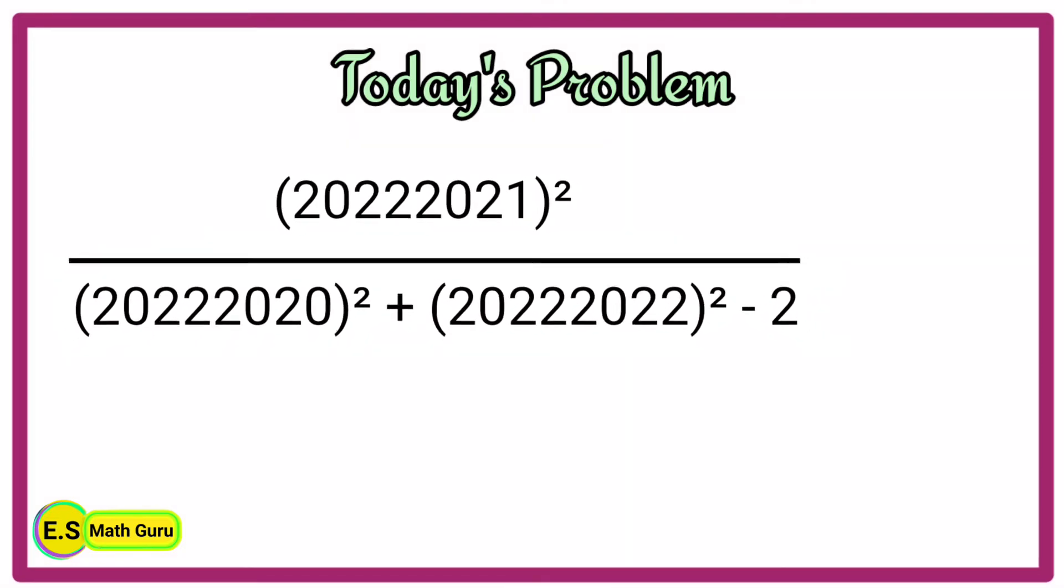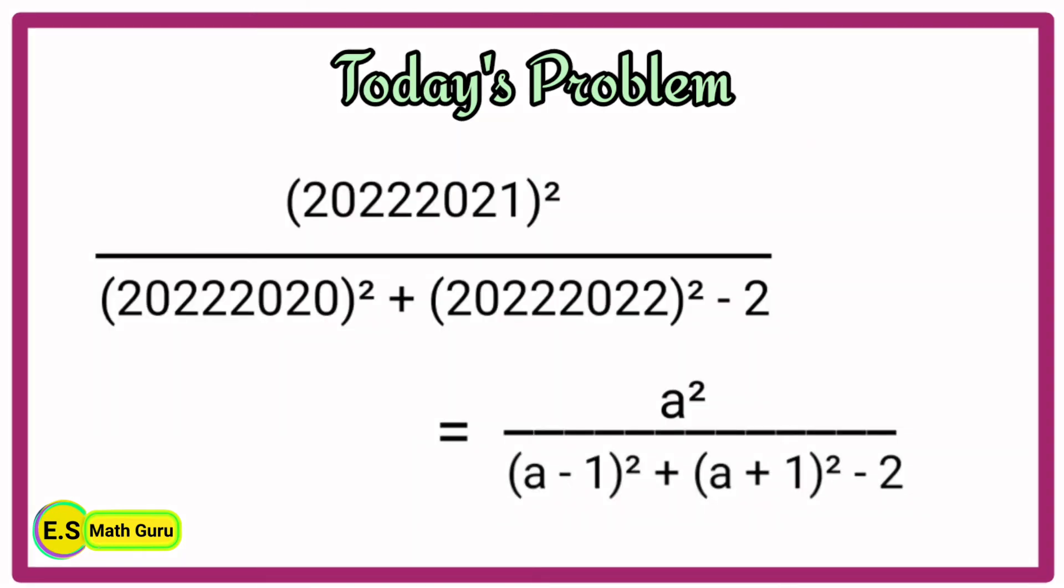Now, let us replace these numbers with a, a minus 1, and a plus 1. Then we get a squared divided by (a minus 1) whole squared plus (a plus 1) whole squared minus 2.